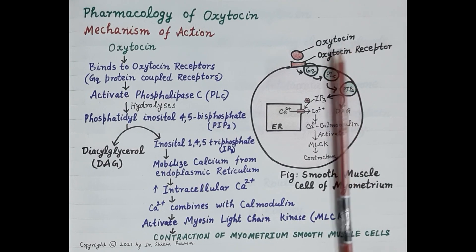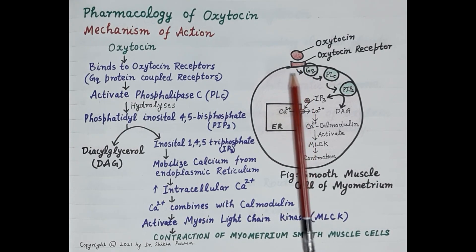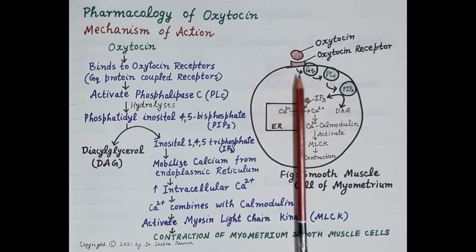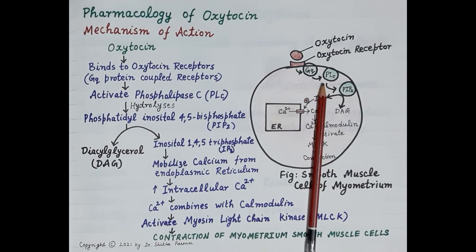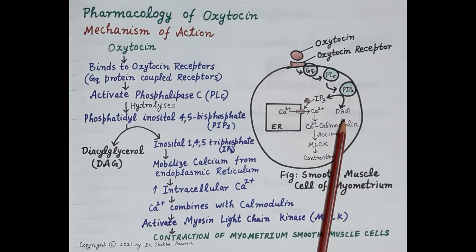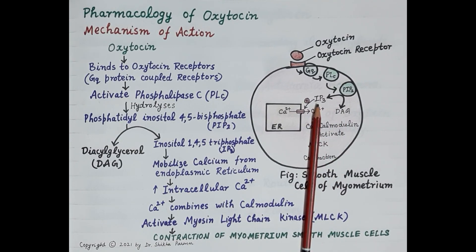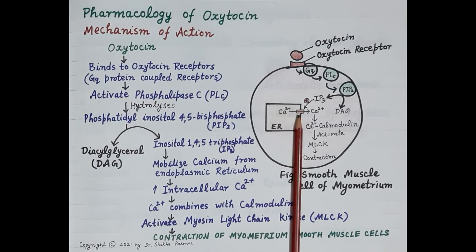Once released from the posterior pituitary, oxytocin binds to oxytocin receptors, which are Gq protein-coupled receptors found on smooth muscle cells of the myometrium. Binding activates phospholipase C, which then hydrolyzes phosphatidylinositol 4,5-bisphosphate (PIP2) into two components: diacylglycerol and inositol 1,4,5-triphosphate (IP3).